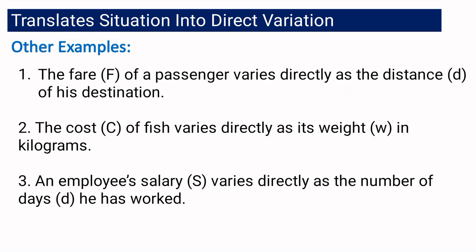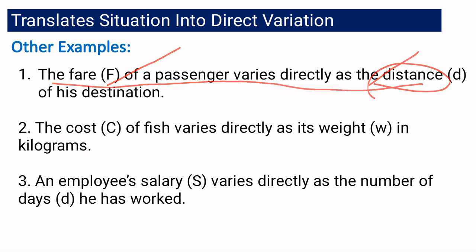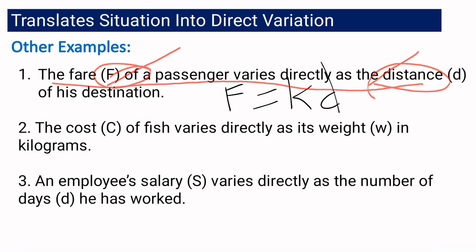Let us consider the following situations. For number one: the fare of a passenger varies directly as the distance of his destination. We can say this is a direct variation because the fare varies directly as the distance — the farther your destination, the higher your fare. And if we translate it into a direct variation equation, it can be written as f equals kd, meaning the fare varies directly as the distance.